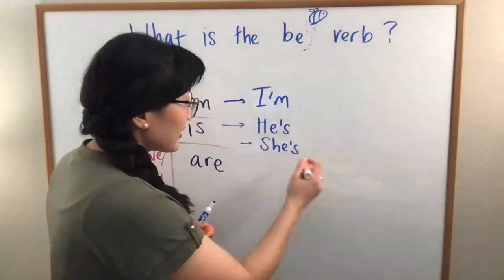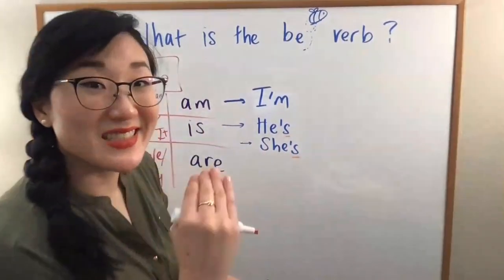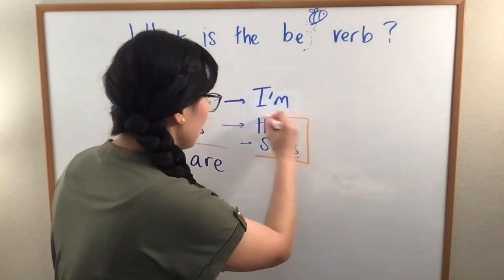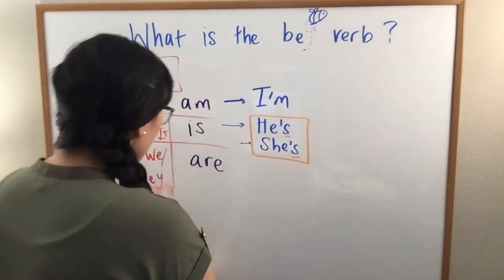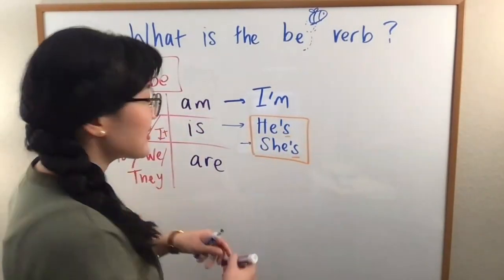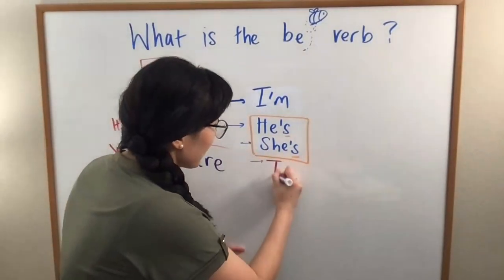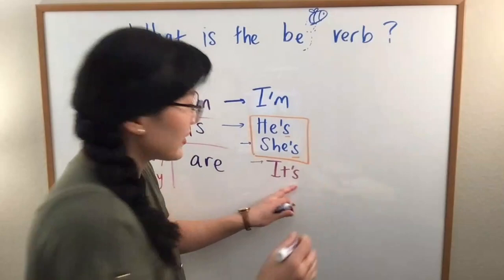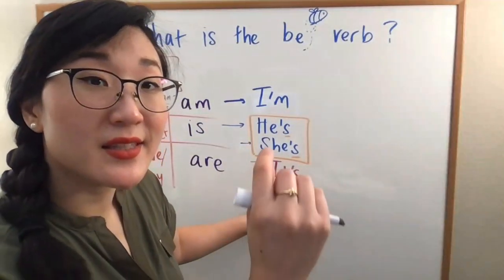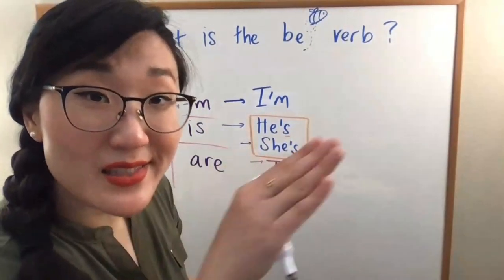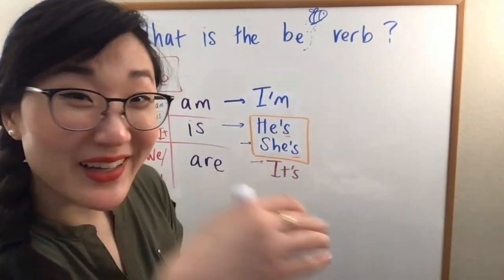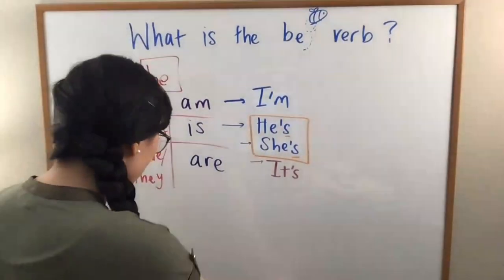He's. She is. She's. So, both of these right now have that Z sound. Okay. This one, it is is a little different. We say it's with an S sound. It's like a snake.